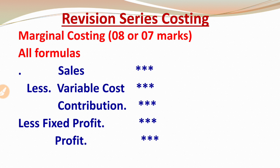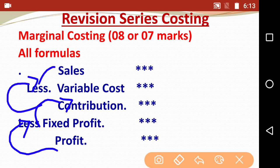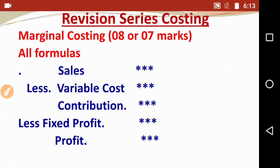For all marginal costing formulas, here is a shortcut. As shown on screen: Sales minus Variable Cost gives you Contribution, and Contribution minus Fixed Cost gives you Profit. All marginal costing formulas can be solved from this basic concept. If profit and fixed cost are given, add them to get contribution. If contribution and variable cost are added, you get sales.